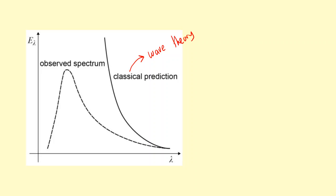You can see there's an agreement in the long wavelength region, so there's not too much of a problem there in terms of the pattern. But it's actually when it comes to the UV region where the problem starts to occur, which is why this is called the UV catastrophe.